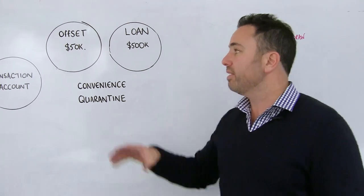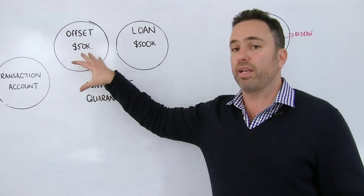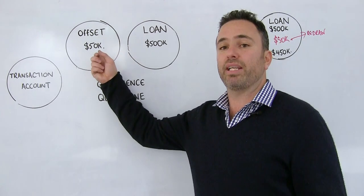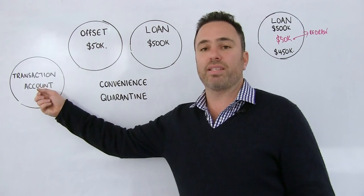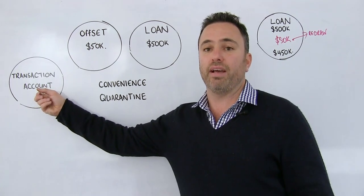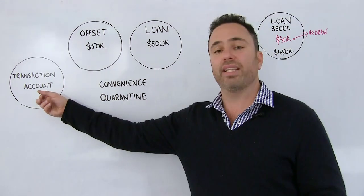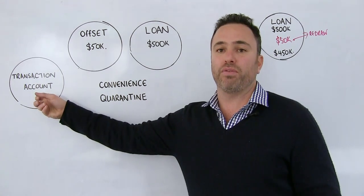And what we do for our clients is we recommend that all money, that's fine, can go into the offset account. Loan repayments can come from there. But do the same thing. Set up a direct debit on a weekly basis into a separate nominated transaction account. And that is your money to spend and live on so that whenever you're looking at that account, you know how much you've got to spend.